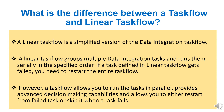What is the difference between a task flow and a linear task flow in IACS? A linear task flow is a simplified version of the data integration task flow — it groups multiple data integration tasks and runs them serially in the specified order. If a task defined in a linear task flow fails, you need to restart the entire task flow; there is no option to restart from the failed task. But in a task flow, you have that option — it allows tasks to run in parallel and has advanced decision-making capabilities, allowing you to restart from a failed task or skip it when a task fails.